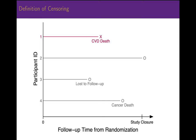Participant 2 has no events during the study and continues being followed to the end of the study. We mark the last date on which it is known that no events have occurred with an O. This participant is subject to administrative censoring at the end of the study. Participant 3 is followed for some time in the study, but then is lost to follow-up. We have simply lost contact with them and do not know their status with regard to the primary endpoint. This person is considered censored due to loss to follow-up on the last date this participant is known to have not had this event, marked here with an O.